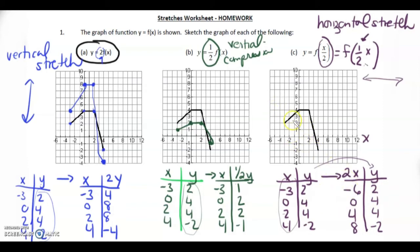Let's graph that. Negative 6, 2 — this negative 3 is now stretched away, getting further and further from the y-axis. Then 0, 4, because you can't stretch 0. Then 4, 4, because this 2 is now onto the 4. And this 4 is now onto 8, so 8, negative 2.